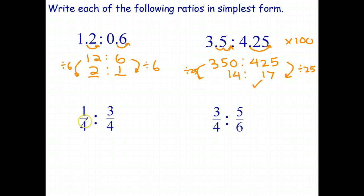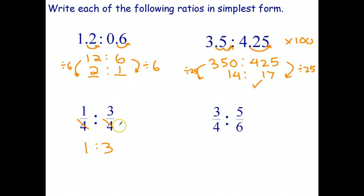If you have fractions that already have a common denominator, you can simply ignore the denominator. For example, the ratio one quarter to three quarters is just 1 is to 3. Another way to think about it: multiply both fractions by 4 and you get the same result.